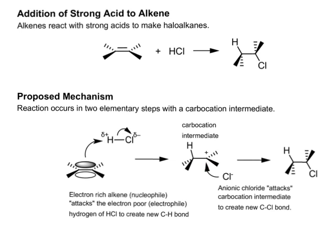The net result is I've gone from a region of high electron density in the pi system, pushed those electrons to create a new bond between carbon and hydrogen, pushed the HCl electrons over to the chlorine to make a chloride, and then the anionic chloride attacks the carbocationic carbon. I get a carbon-carbon single bond left behind, a new C-H bond, and a new C-Cl bond. In the next video, I'm going to show you the very specific alkene propene reacting with HCl and some of the details involved in that reaction mechanism.